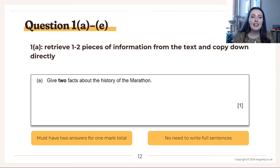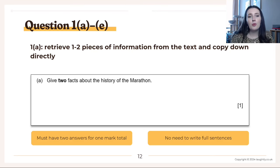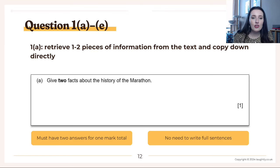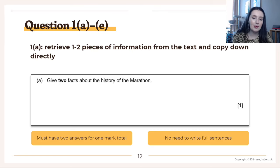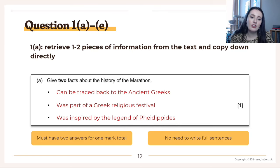Question 1A — this is the easiest question in the whole paper. It's simple retrieval: just directly copy. You're retrieving one to two short pieces of information and copying them down. The question asked for two facts about the history of the marathon: it can be traced back to the ancient Greeks and was part of a Greek religious festival, and it was inspired by the legend of Pheidippides. Those answers are all in the first paragraph.